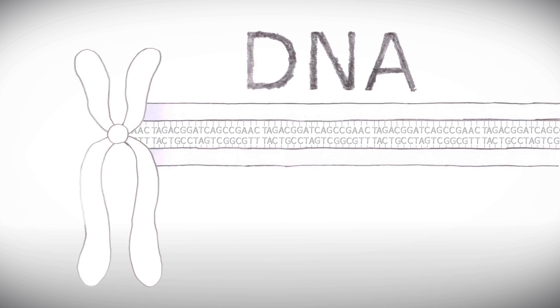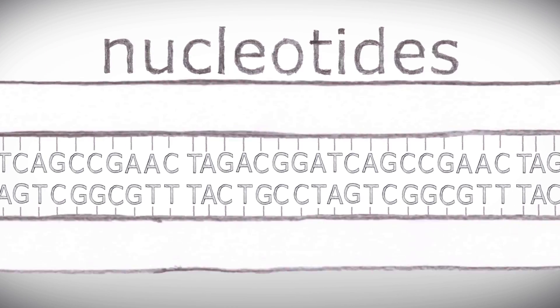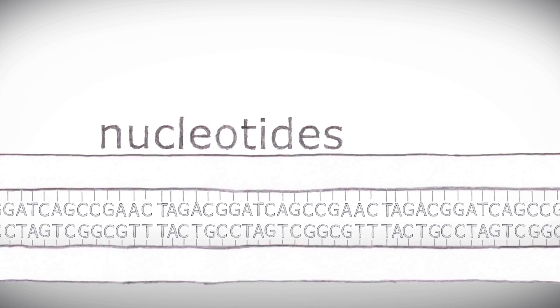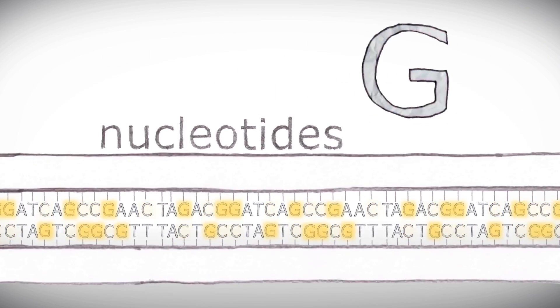The code in your DNA is composed of little molecules called nucleotides. The important thing to know about nucleotides is that there are four kinds, and we geneticists have given them each a letter: A, C, G, and T.